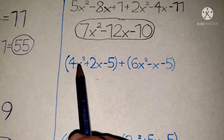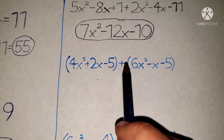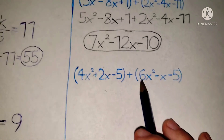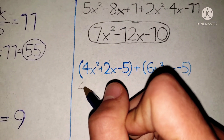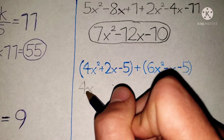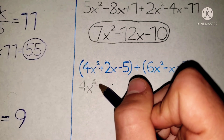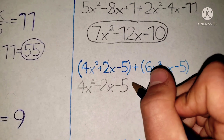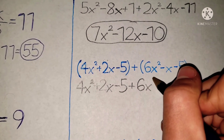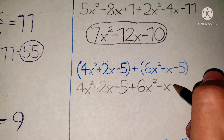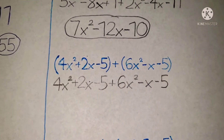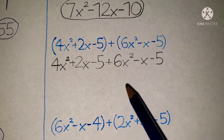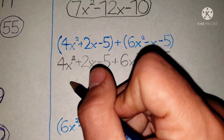Now the next one: 4x squared plus 2x minus 5, plus 6x squared minus x minus 5. Again, remove the parentheses — so it becomes 4x squared plus 2x minus 5 plus 6x squared minus x minus 5. Then combine like terms: 4x squared plus 6x squared is going to be 10x squared.